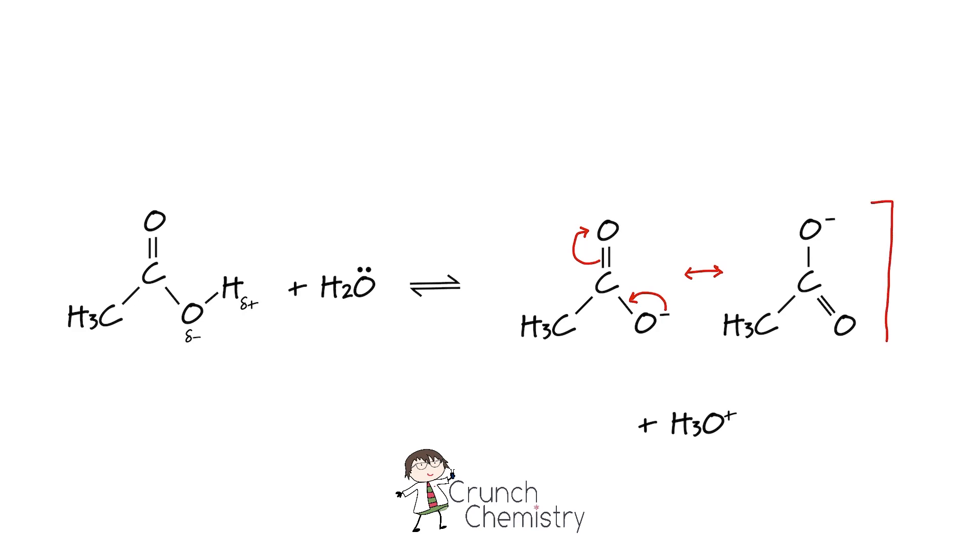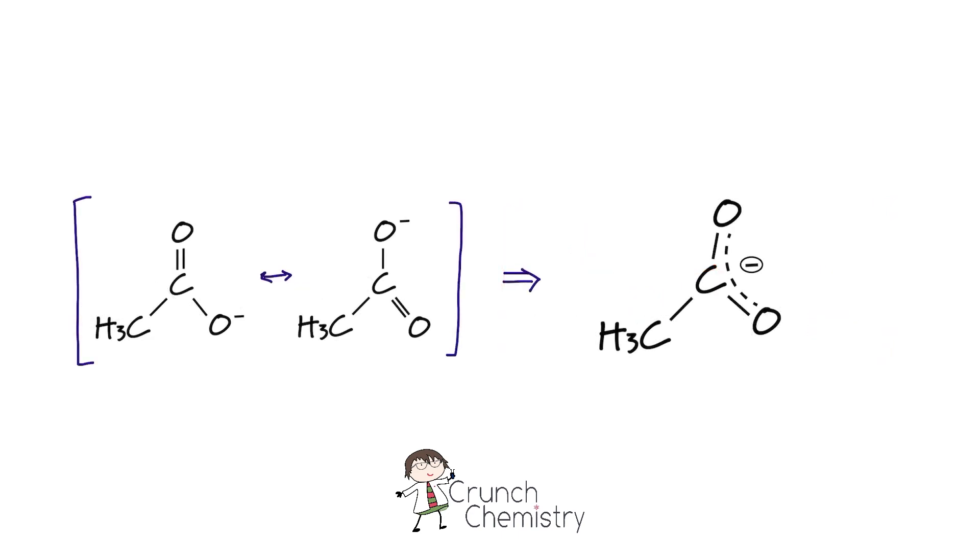So we could put nice square brackets around that and we could add arrows to show the movement of electrons as we move from one resonant form to the other. And we often see this summarized with a version of our carboxylate ion looking like so.